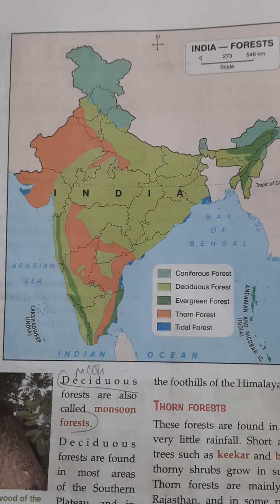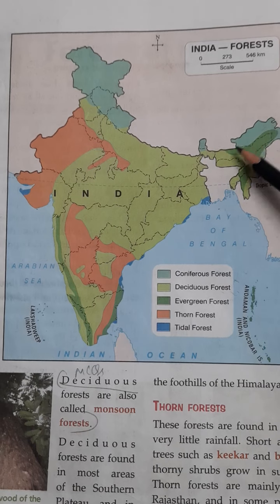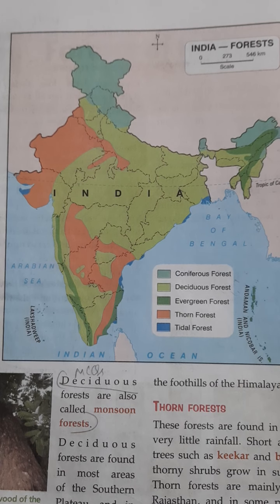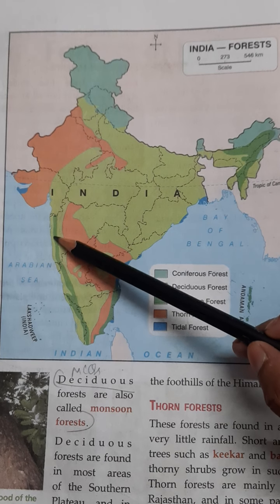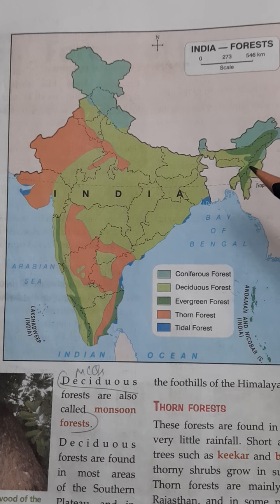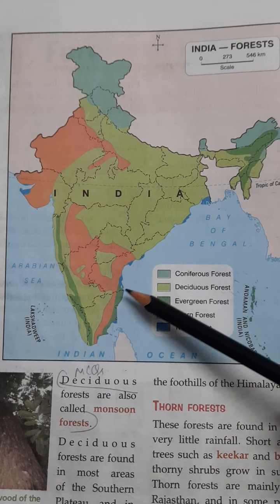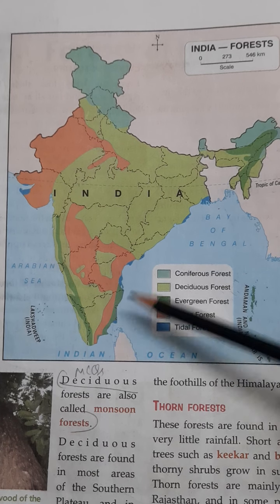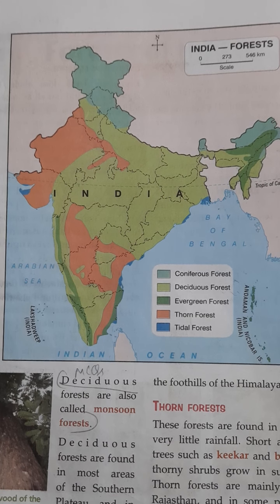As you can see on this map, deciduous forests are found in most areas of the southern plateaus and in the foothills of the Himalayas. You can see the light green part — it covers a large part of our country. The examples are teak, sal, and shisham.